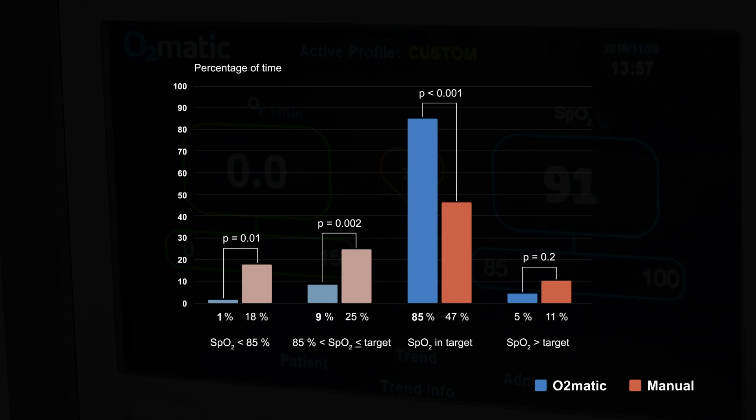Especially time with severe hypoxemia, defined as saturation below 85 percent, was markedly reduced with O-matic from 18 to 1 percent. And time with moderate hypoxemia was reduced from 25 to 9 percent.